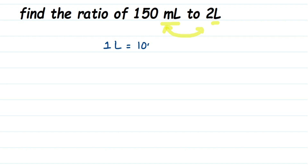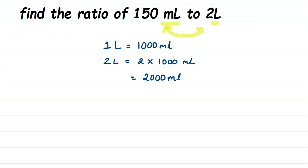We know that one liter is equal to one thousand milliliters. So two liters will be equal to two times one thousand milliliters, which equals two thousand milliliters.